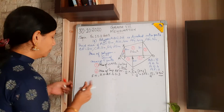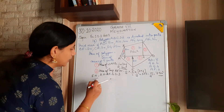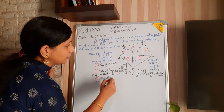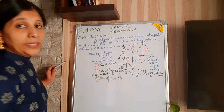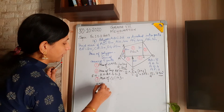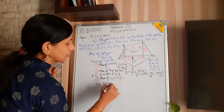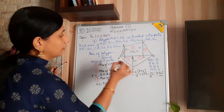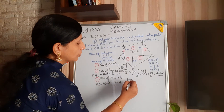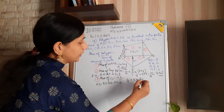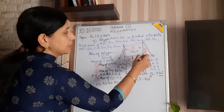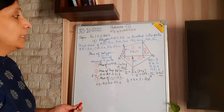The third part is a triangle. Area of triangle CHD equals half × base × height. The base HD equals AD minus AH = 8 minus 6 = 2. So half × 2 × 3 = 3 centimetres square.